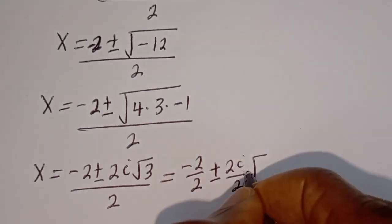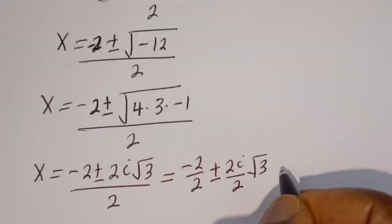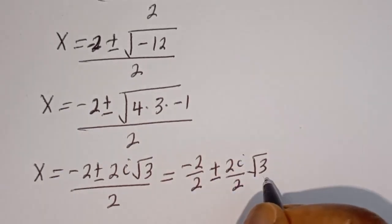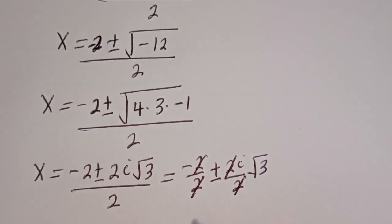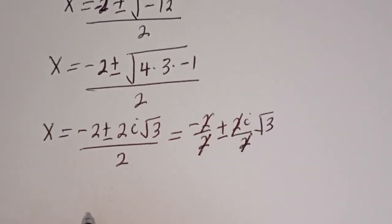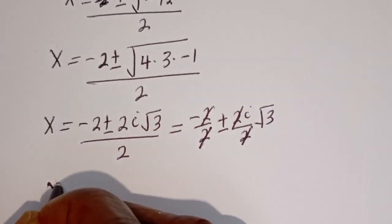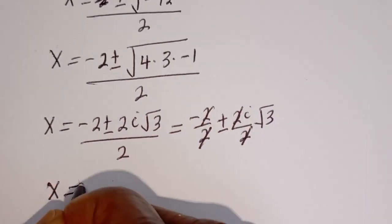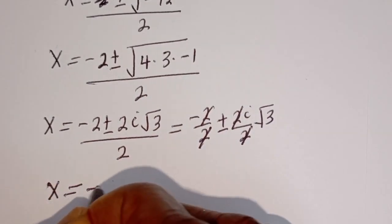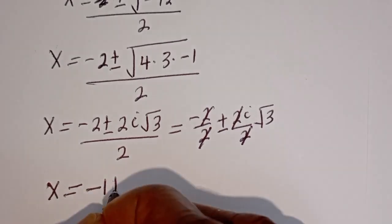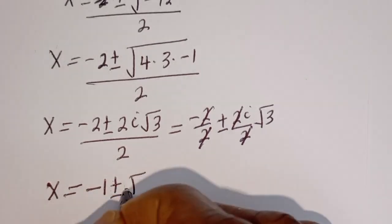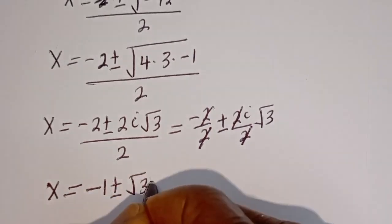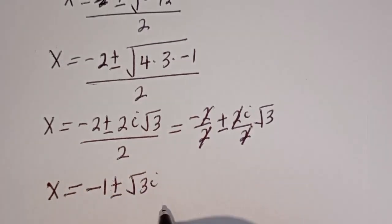Then s is equal to minus 1 plus or minus root 3 times i. These are the complex root values of s for the second equation.